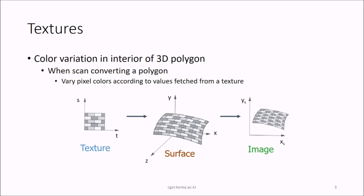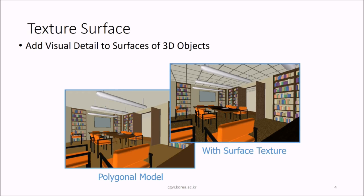Texture refers to color variation in the interior of a 3D polygon. When scan converting a polygon, what happens is that it varies pixel colors according to the value fetched from the texture. So this is a texture, and this is a surface. How this texture is draped onto the surface gives you the final image. A texture surface adds visual detail to surfaces of 3D objects. Observe the ceiling and the floor here — with a surface texture, it is giving a more realistic view.